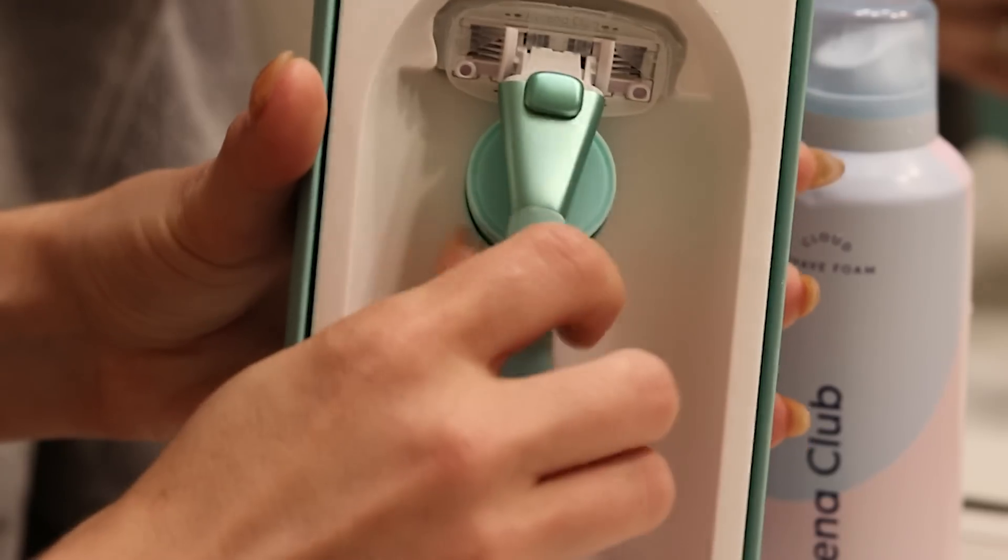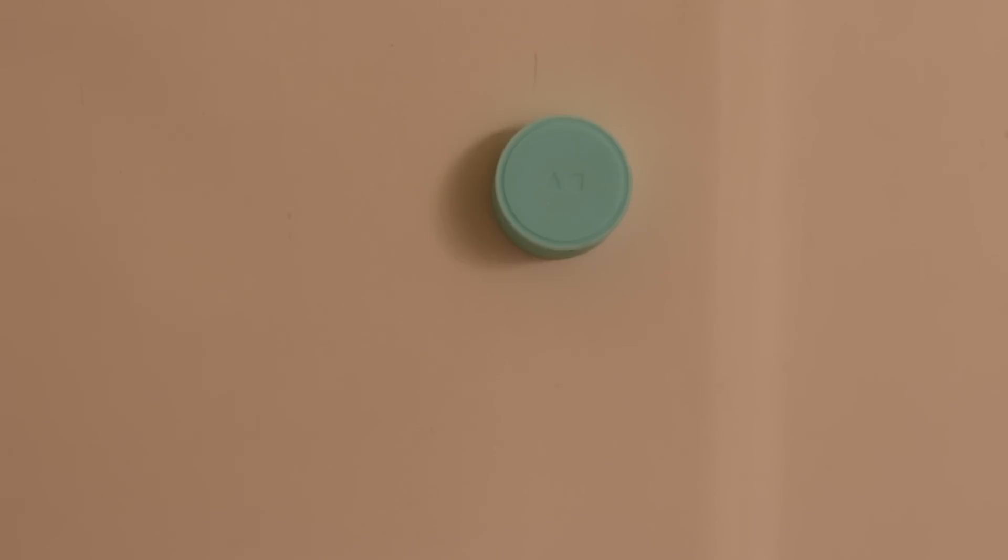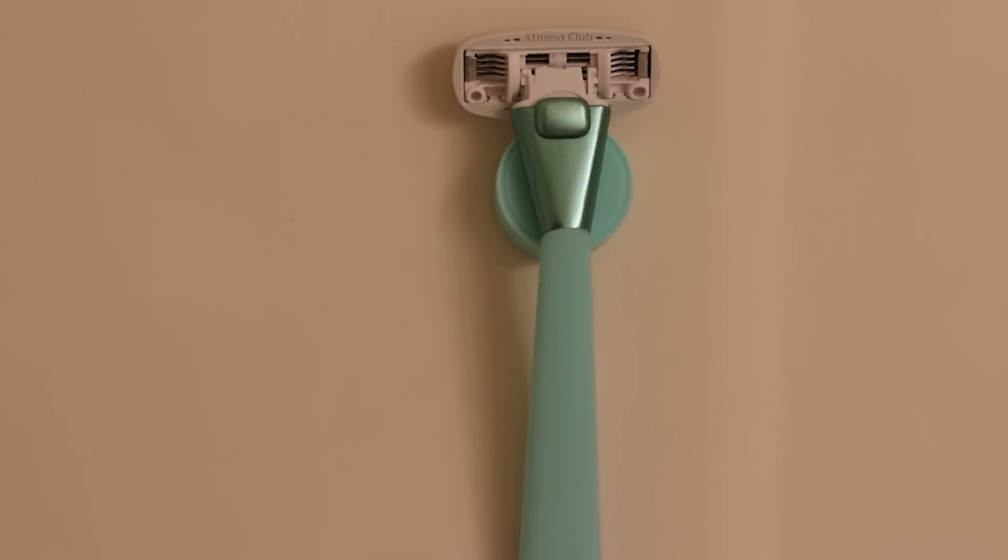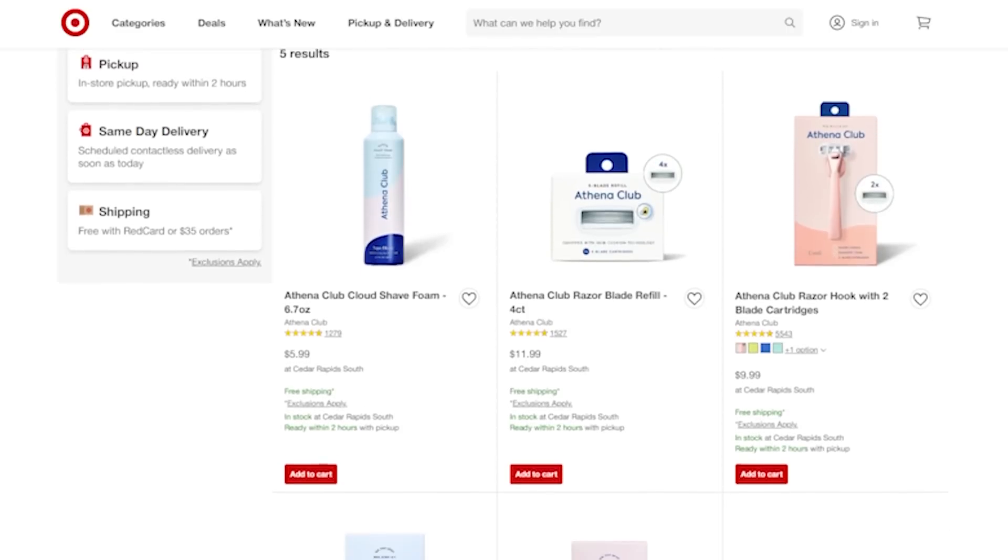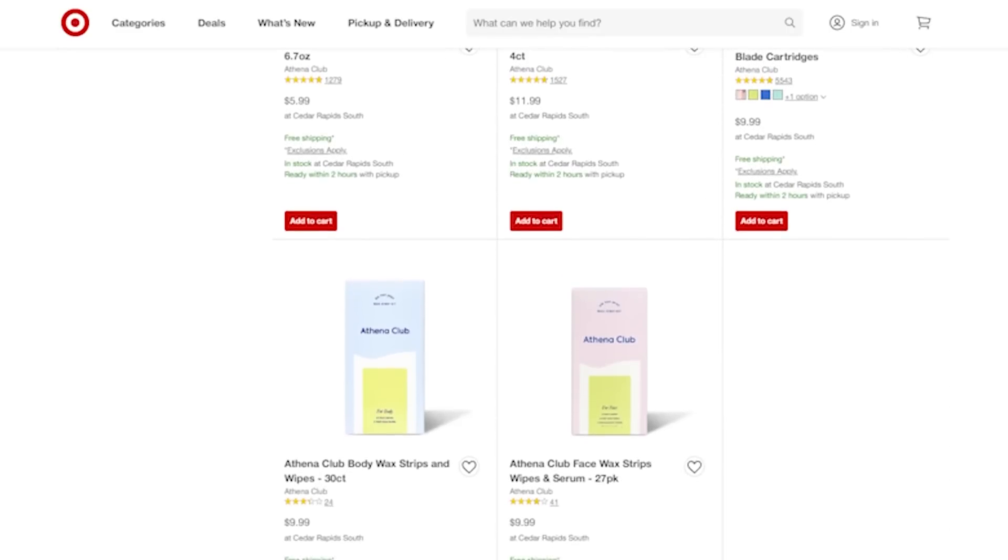Athena Club is a subscription service, but if you're a Target shopper, then you will be very happy to hear that you can actually buy their razor kit in Target stores. So next time you make your Target run, definitely check them out. The razor kit includes the razor handle, two razor cartridges, a magnetic hook that is super easy for storage right in your shower. You can also customize the color of your razor kit. They have so many cute colors. Some are even limited edition. Of course, y'all know me. I had to go with the green one because it's my favorite color, but not only can you get their amazing razor kit, you can also get tons of other great self-care products from Athena Club at Target, including their cloud shave foam, which is just so luxurious. You can get wax strips for your face and for your body if you prefer that method of hair removal. And then you can also get cartridge refills, all for under $12 at Target.